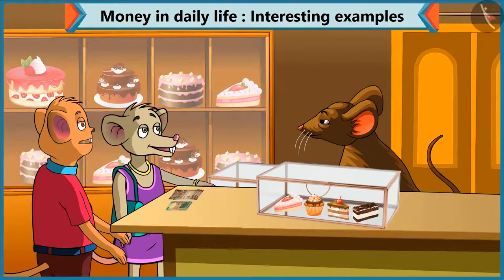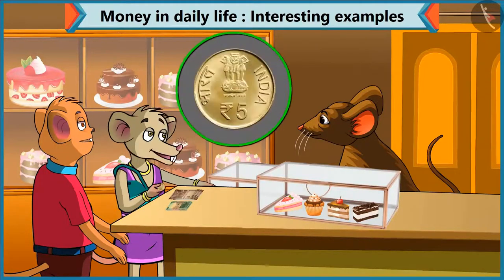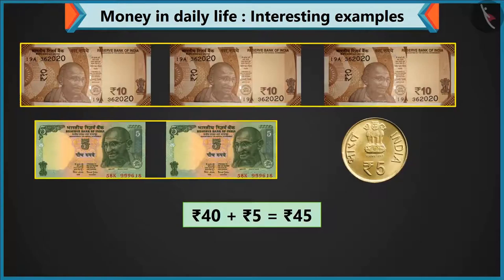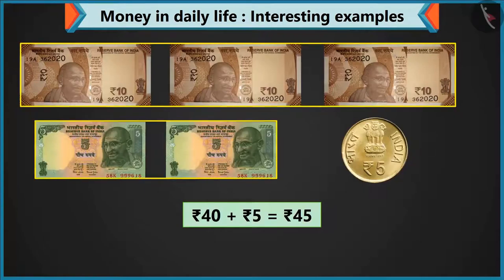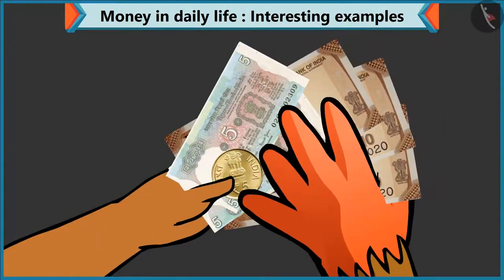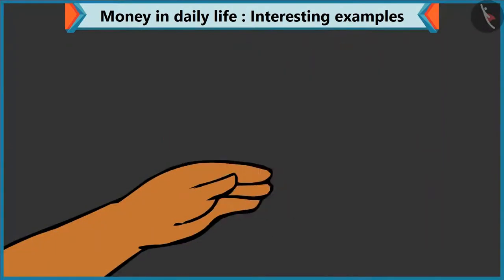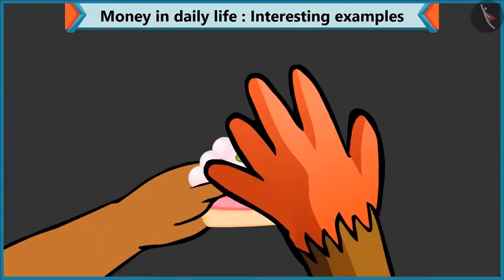Yes, Chichi, we have to add 5 rupees to this 40 rupees. But I had only 2 notes of 5 rupees. Chichi, you have coins, right? Yes. Take a coin of 5. So now 40 and 5 makes 45 rupees. Take this, brother — 45 rupees.